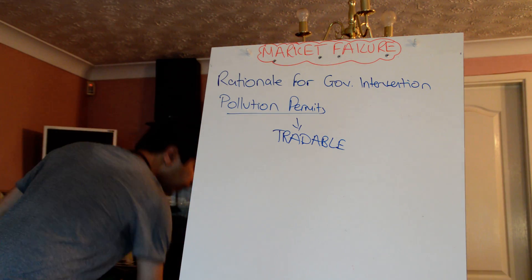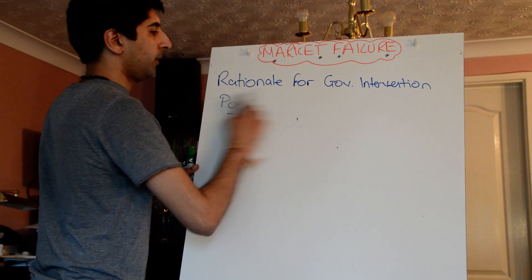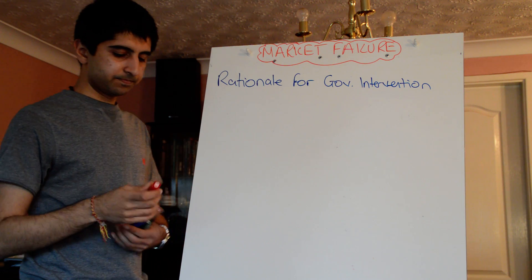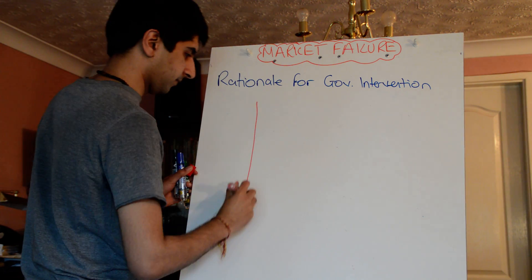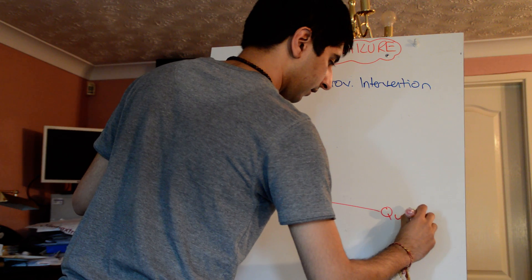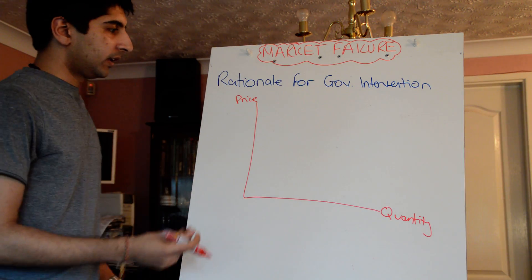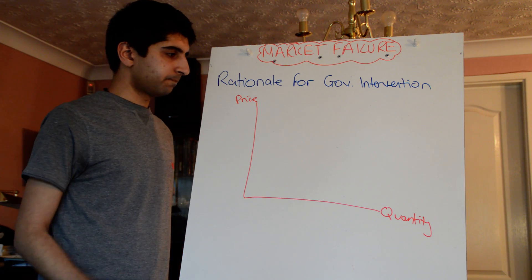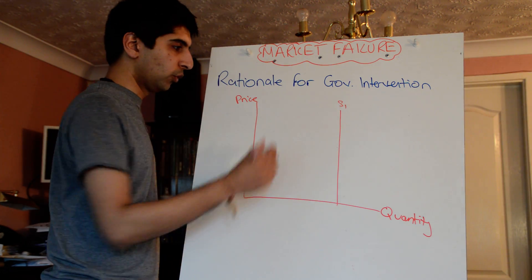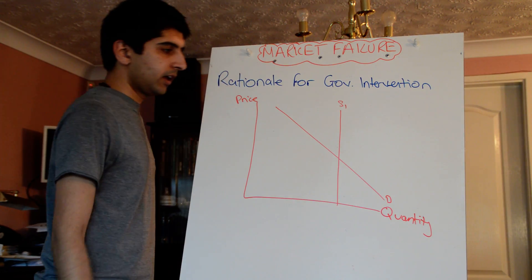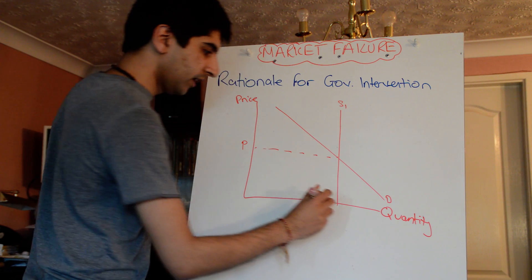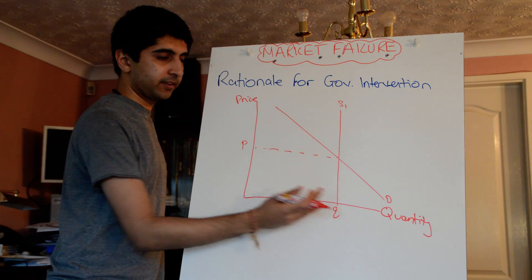Let's look at the diagram. If you want to talk about pollution permits, you can use this diagram. There's a market for pollution permits created, and it looks like this. You have price on the y-axis and quantity on the x-axis. Because the government is supplying the amount of permits and that supply is fixed, we have a vertical supply curve called S1. We have a normal downward-sloping demand curve for permits. Given that fixed supply, we have a price level for permits at P and the quantity of permits allocated at Q.